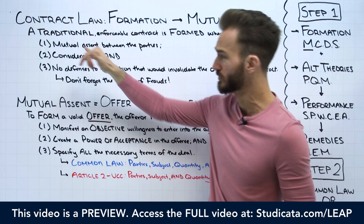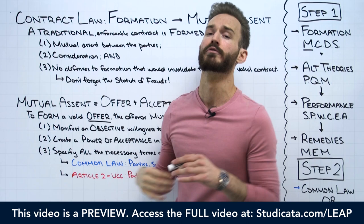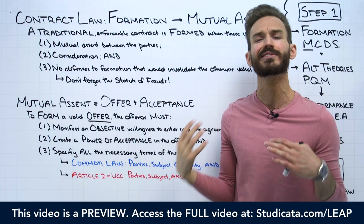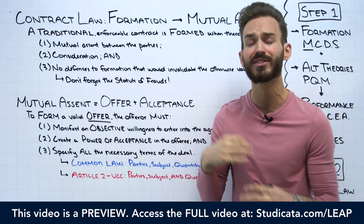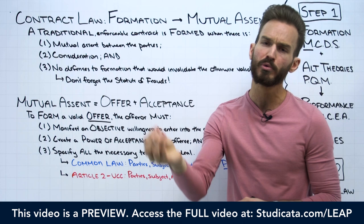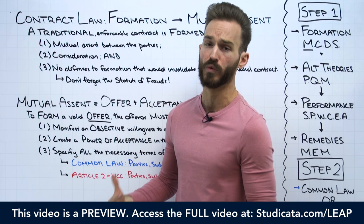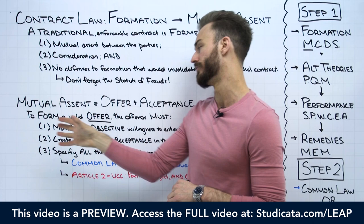What exactly is mutual assent? Remember, this is the idea that we need a meeting of the minds between the parties — a mutual understanding or mutual agreement. To make this determination, we ask whether we have a valid offer and an acceptance of that offer. If we have offer and acceptance, we say that we have mutual assent between the parties.